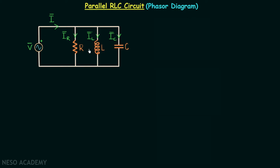Here I have taken the parallel RLC circuit, and from KCL we can say that I phasor is equal to IR phasor plus IL phasor plus IC phasor. The phasor of the net current is equal to IR phasor plus IL phasor plus IC phasor.